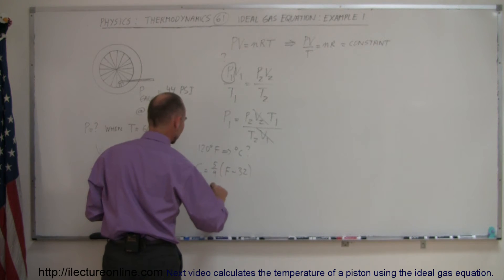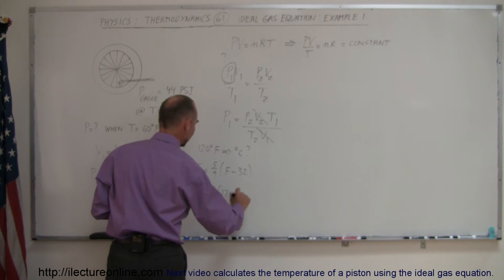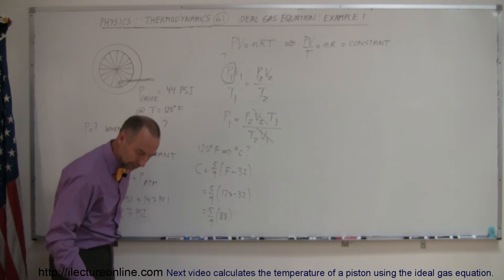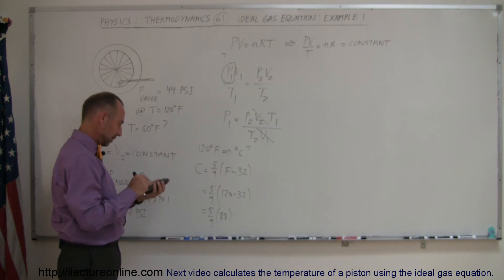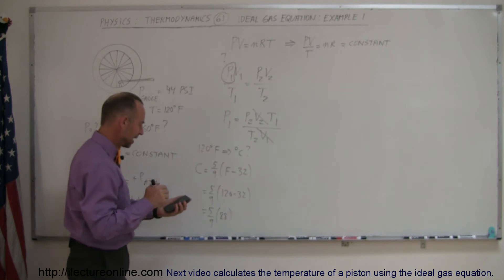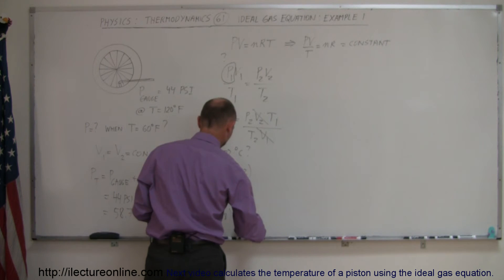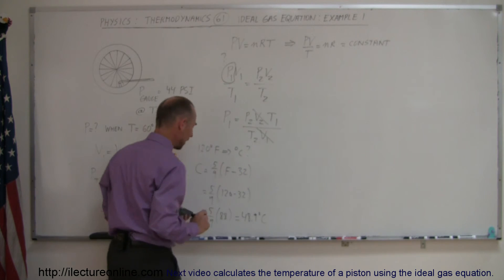In centigrade degrees is equal to 5 over 9 times 120 minus 32. So that's equal to 5 over 9 times 88. And so with the calculator, we'll get that number 88 times 5 divided by 9. And so we get 48.89 degrees or just simply say 48.9 degrees centigrade.